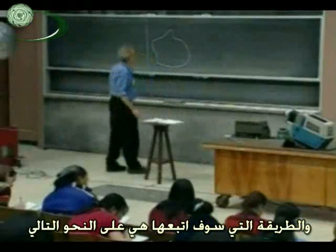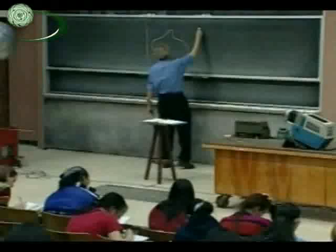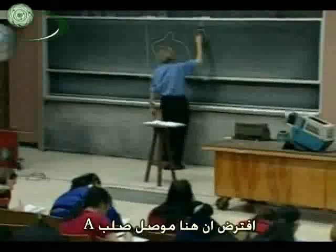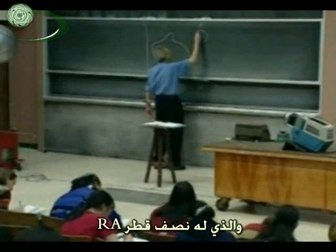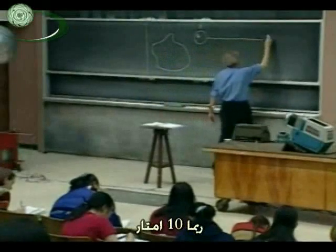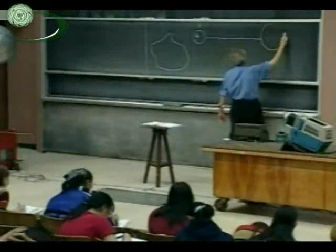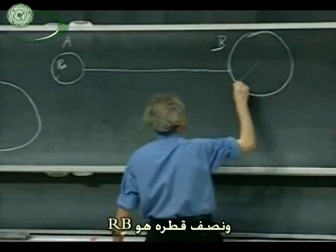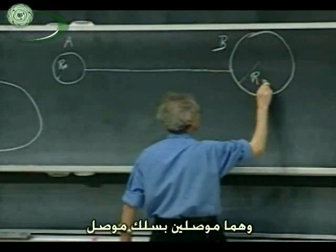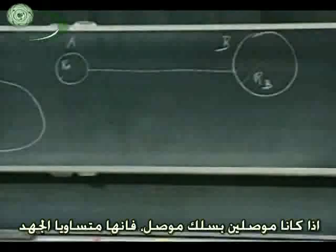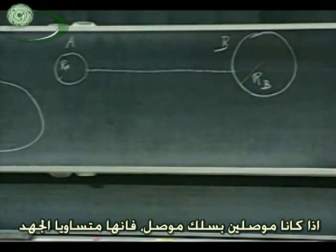The way I want to approach that is as follows. Suppose I have a solid conductor A with radius R_A, and very, very far away — maybe tens of meters away — I have a solid conductor B with radius R_B, and they are connected through a conducting wire. That's essential. If they are connected through a conducting wire, then the system is equipotential — they all have the same potential.